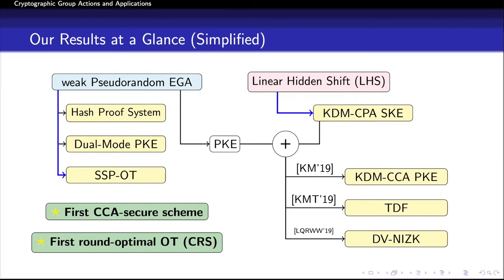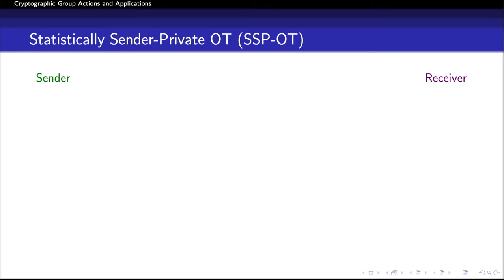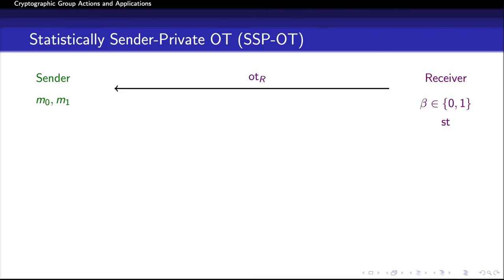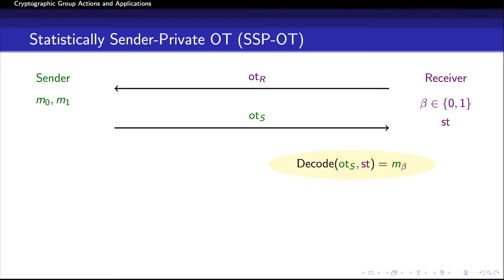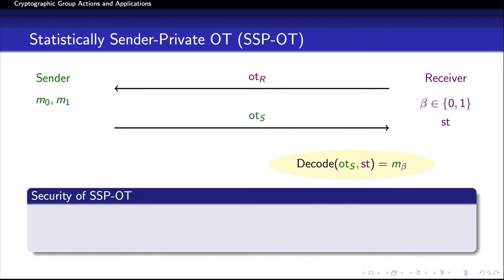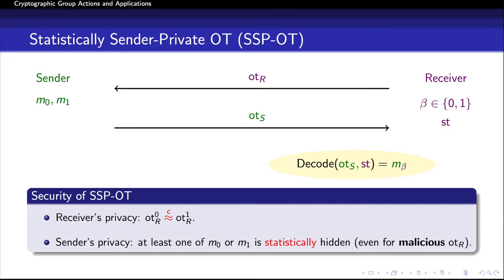First, we see how to realize an SSPOT from a weak pseudorandom EGA. An SSPOT is a protocol between two parties, sender and receiver. The sender has two messages M0 and M1, and the receiver has a bit beta. The receiver sends a message OTR depending on its bit and saves a private state ST. The sender responds with a message OTS. At the end, the receiver should be able to recover message M_beta using OTS and its private state ST. The first security requirement is receiver's privacy: the receiver's message when beta is 0 should be computationally indistinguishable from when beta is 1. The second is sender's privacy: at least one of M0 or M1 should be statistically hidden for any maliciously chosen message from the receiver.